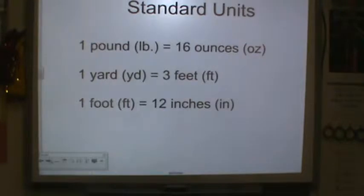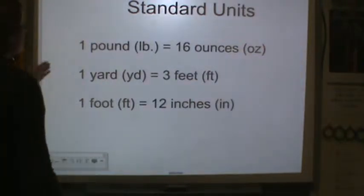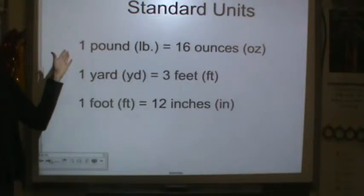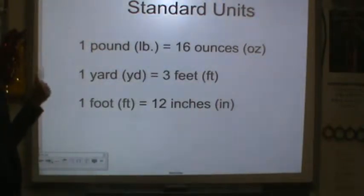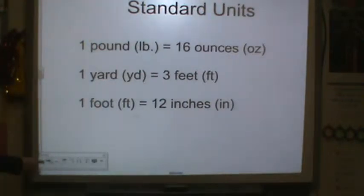We've talked mostly about metrics, now we're going to also talk about standard units. So one pound is worth 16 ounces, one yard is 3 feet, and one foot is the same as 12 inches. Please write this down because you're going to need this in your notes.